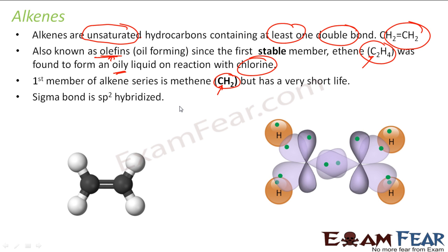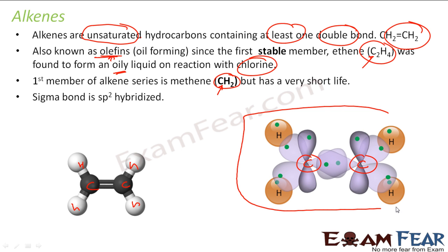This sigma bond is sp2 hybridized. In this case, if you see, this is my ethene. Each of these carbons is sp2 hybridized. So all the carbons in ethene are sp2 hybridized. We have discussed more about the structure of ethene in the past chapter.